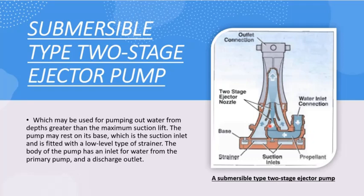The Venturi effect is applied twice. As the equipment is submerged in the fluid, the fluid gets introduced into the equipment through the suction inlets. A strainer is fitted into the suction inlet to prevent waste or oversized objects from entering the equipment and clogging it.